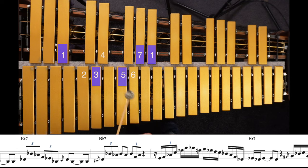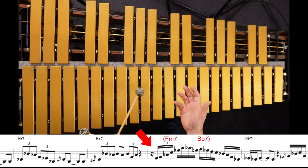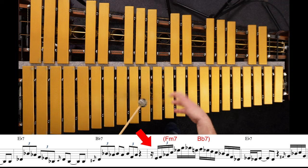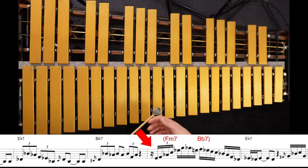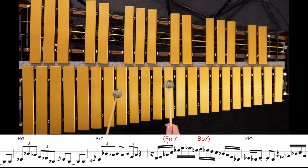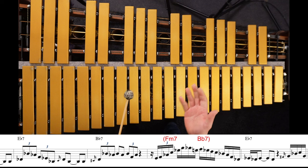Then we have a superimposition of a 2-5-1. Normally it's just Bb7. I've decided to arpeggiate an Fm9 and then use an enclosure to get to the fifth on that Bb7 chord in the second half of that bar.